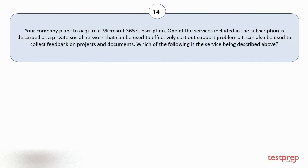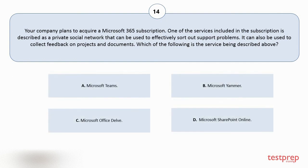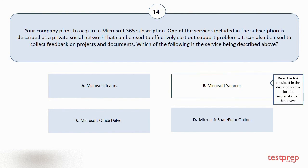Question number fourteen. Your company plans to acquire a Microsoft 365 subscription. One of the services included is described as a private social network that can be used to effectively sort out support problems. It can also be used to collect feedback on projects and documents. Which of the following is the service being described? Your options are: A. Microsoft Teams. B. Microsoft Yammer. C. Microsoft Office Stealth. D. Microsoft SharePoint Online. The correct answer is option B.